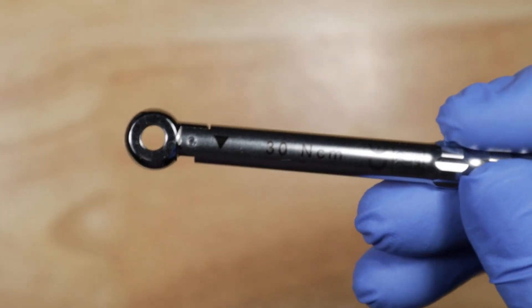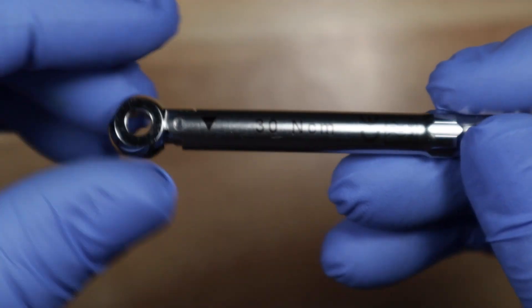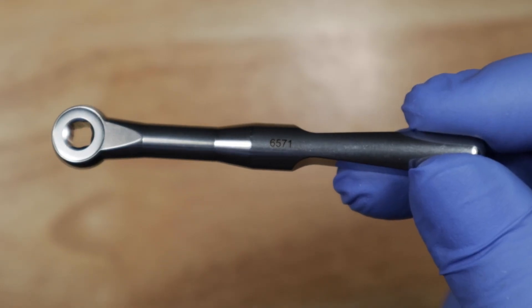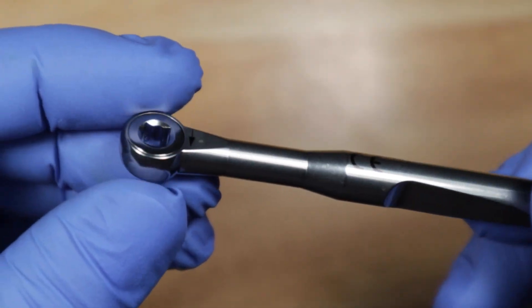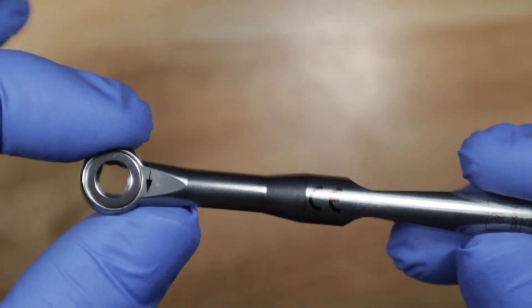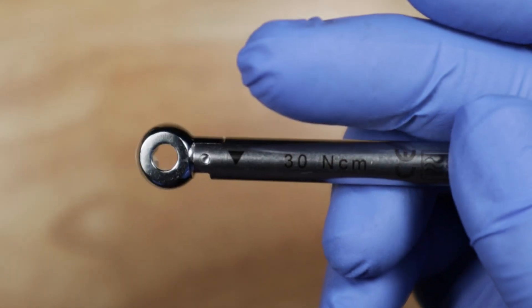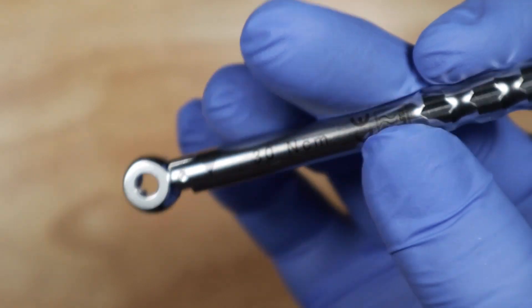And lastly, don't confuse this with the surgical torque wrench. So this one has a torque setting at 30 newton centimeters. The surgical one that comes in your surgical kit actually does not have a torque setting. So this can actually torque to infinity, right? So this one will over torque your abutment. This one will not. This one says 30 newton centimeters. This is the prosthetic wrench.